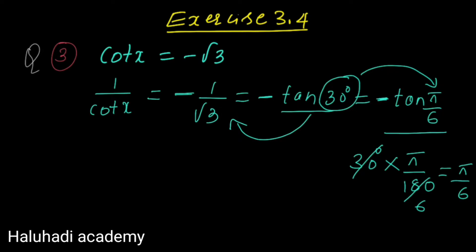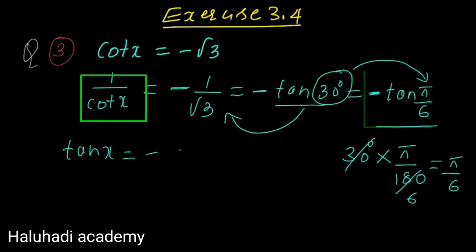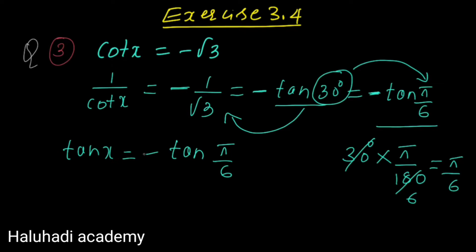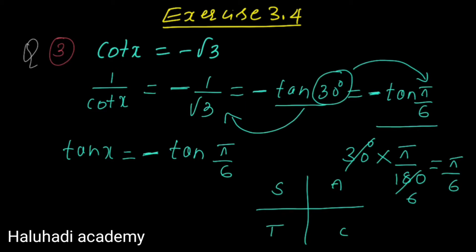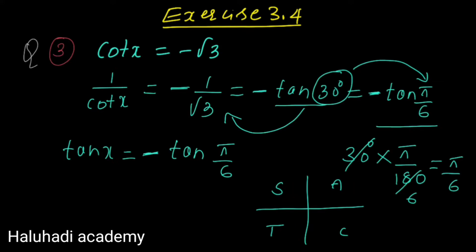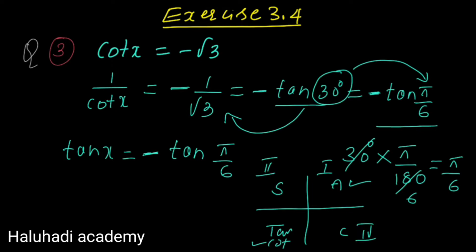So we have tan x equals minus tan pi by 6. Since the value is negative, we apply the ASTC rule to check in which quadrants tan is negative. ASTC: A means all functions positive in first quadrant, S means sine and cosecant positive in second, T means tan and cot positive in third, C means cosine and secant positive in fourth. So tan is negative in the second and fourth quadrants.